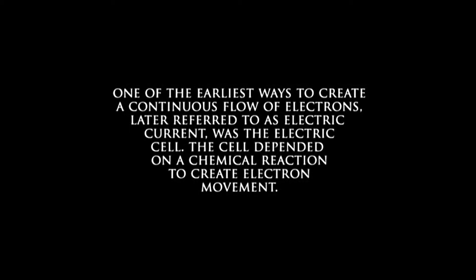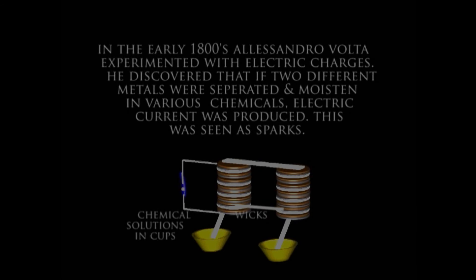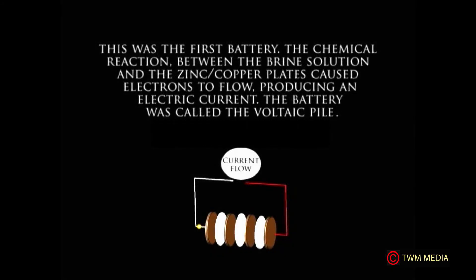In the early 1800s, Alessandro Volta experimented with electric charges. He discovered that if two different metals were separated and moistened in various chemicals, electric current was produced. This was seen as sparks. This was the first battery. The chemical reaction between the brine solution and the zinc and copper plates caused electrons to flow, producing electric current. The battery was called the Voltaic Pile.